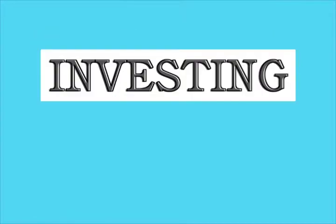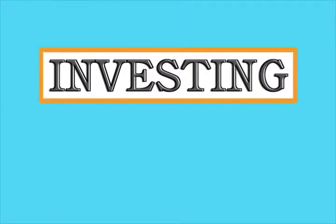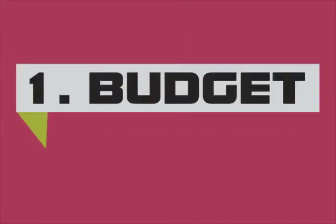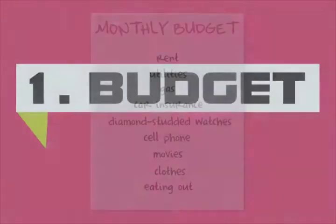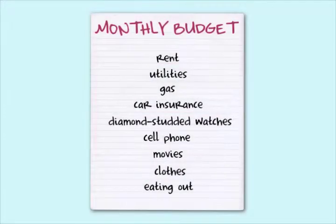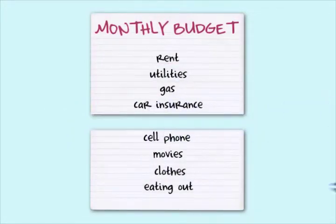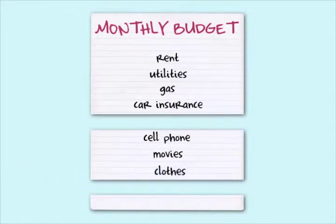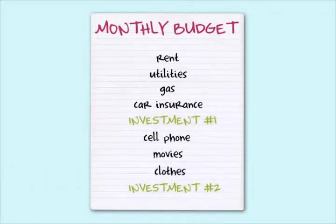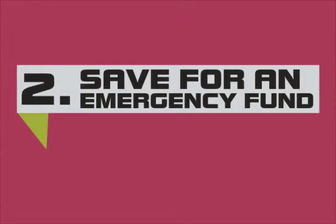When you start investing, it's good to have a plan. Here's a quick outline that can help formulate your investment strategy. Budget: a budget lets you know what you can spend money on each month, so you can cut back on unnecessary expenses and be confident in your ability to invest a specific amount each month.